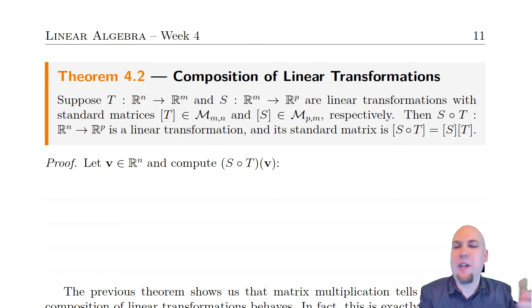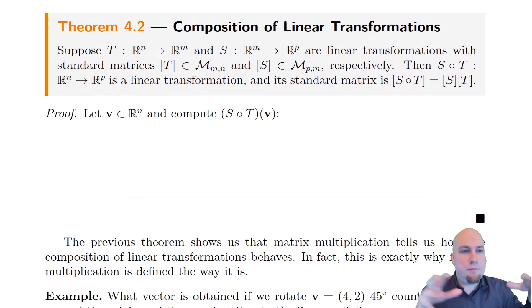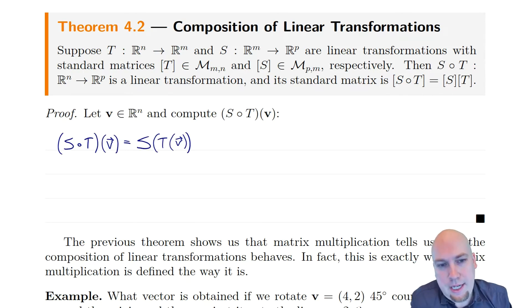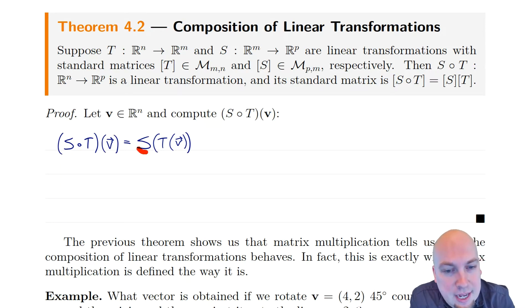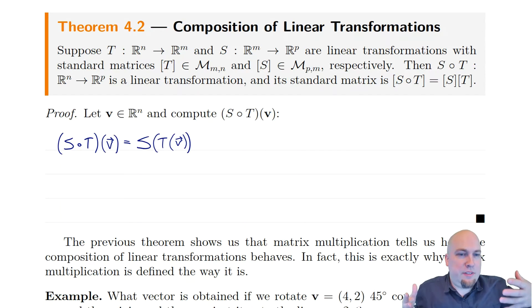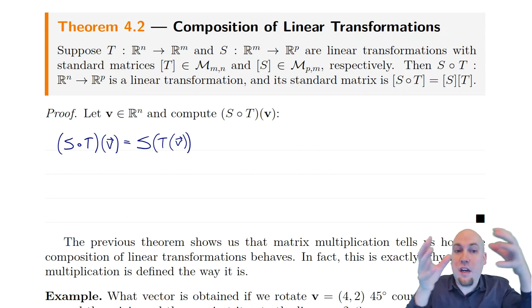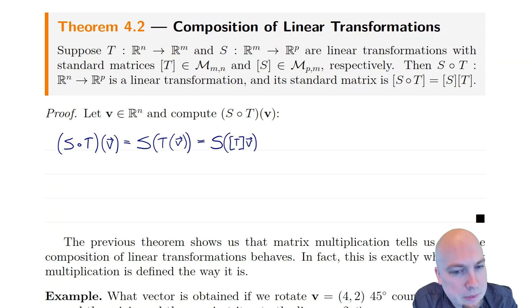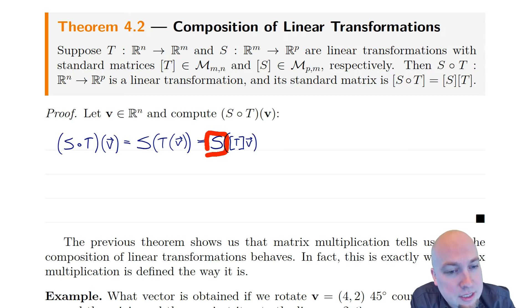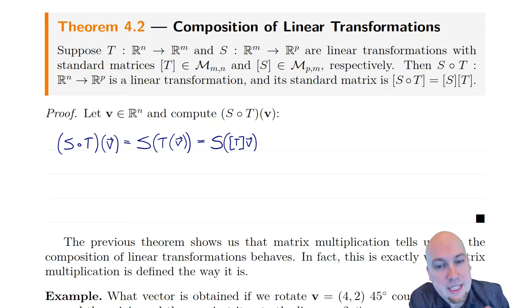Let's actually go through the proof of this theorem. It's extremely straightforward — it's essentially a one-line proof, because everything has been defined in the right way to make this work out nicely. To prove this, let's compute S composed with T of v. By definition, S composed with T means you do T first and then you do S. Now I'm just going to start representing things by matrices. T of v is the same as the standard matrix of T times the column vector v. So I've replaced the linear transformation by the matrix.